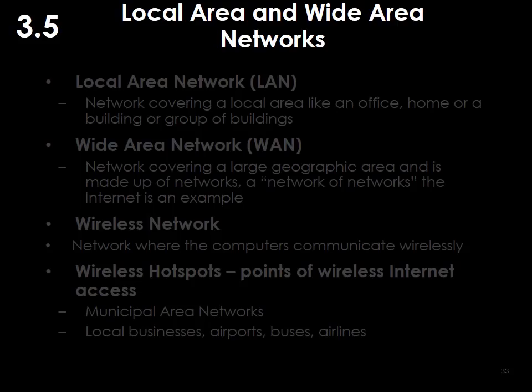Local area networks, LANs, serve a local area like an office, home, building, or group of buildings. Wide area networks, WANs, cover a wide geographic area — maybe even the whole world — and are connected usually through the internet. There can be a wireless network where you connect with a radio signal, or you could go to a hotspot like Starbucks and connect to your home network as well.